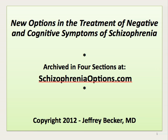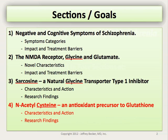We've already discussed the negative and cognitive symptoms of schizophrenia in the symptom categories. We discussed the NMDA receptor with its two neurotransmitters glycine and glutamine. We discussed sarcosine, the natural glycine transporter type 1 inhibitor. And finally, we'll discuss N-acetylcysteine, which is an antioxidant precursor to glutathione production.